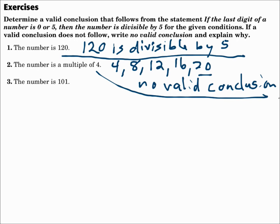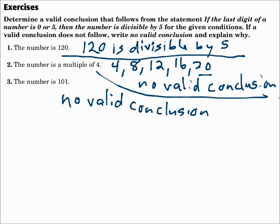Number three: the number is 101. Well, 101 doesn't end in zero or five, so I can't say what the conclusion might be — there is no valid conclusion. The statement doesn't say anything about a number ending in one. It only says what happens when it ends in zero or five.